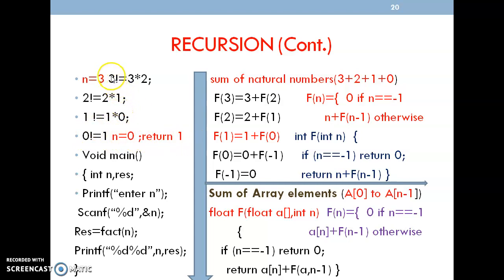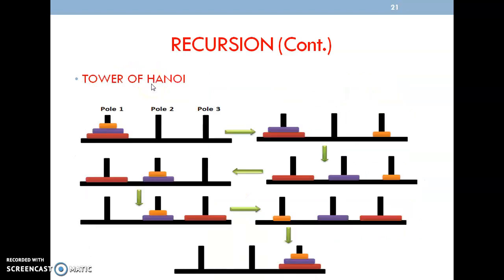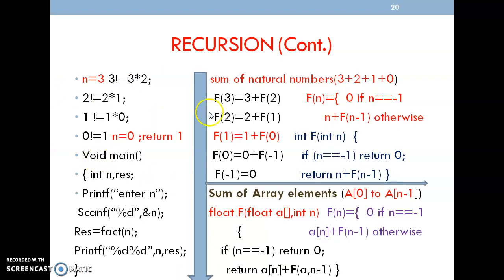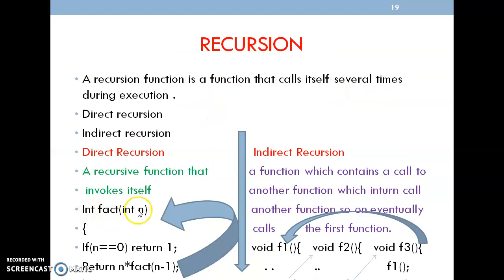Then, if this is n, it is n into factorial of n minus 1. For that, we have written the function: int factorial(int n). Here n will be 3, which we ask in the main function. If n equals 0, return 1 — that is 0 factorial, and we get the answer 1. Then return n into fact(n minus 1). So if 3 is there, it becomes 3 into factorial(2), giving answer 6. Repeatedly, it calls the same function.